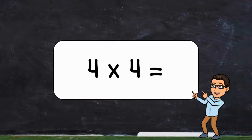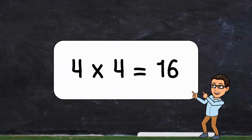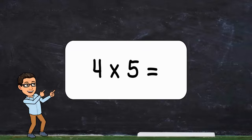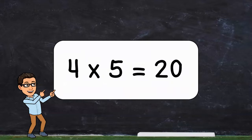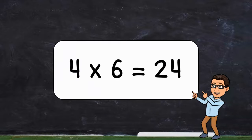Four times four. Four times four equals sixteen. Four times five. Four times five equals twenty. Four times six. Four times six equals twenty-four.